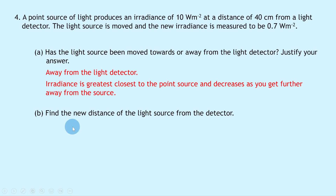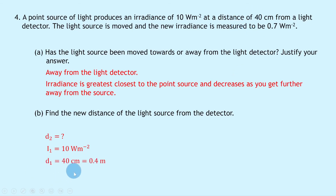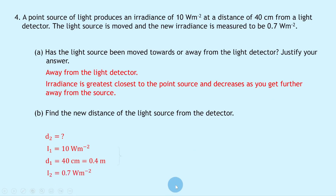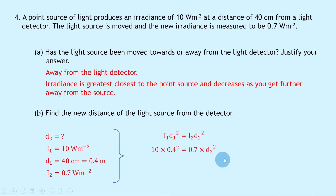Part b asks for the new distance. We want to find d₂. I₁ = 10 W/m², d₁ = 40 cm = 0.4 meters, and I₂ = 0.7 W/m². Using I₁d₁² = I₂d₂²: substituting gives 10 × 0.4² = 0.7 × d₂². Computing the left side and dividing by 0.7 gives d₂² = 2.3. Taking the square root gives d₂ = 1.5 meters.